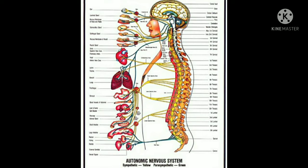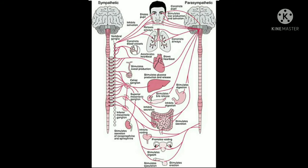The autonomic nervous system is also called the visceral nervous system. It regulates the function of internal visceral organs of the body through its two antagonistic components: sympathetic and parasympathetic.